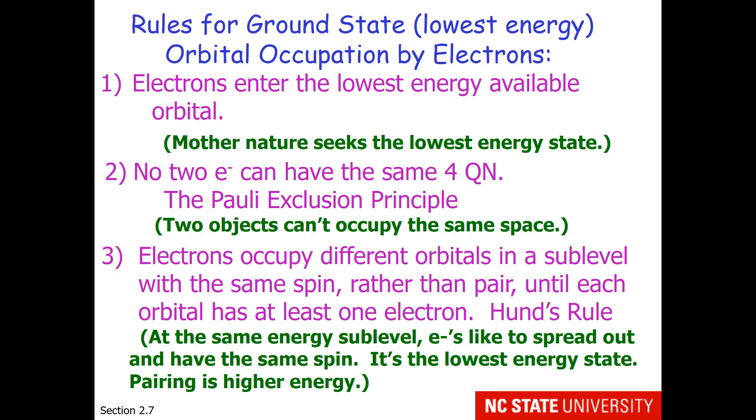Here are the three rules for ground state orbital occupancy by electrons. Ground state is the lowest energy state. First, when electrons are added to an atom, they enter the lowest energy available orbital. That's because Mother Nature seeks the lowest energy state.